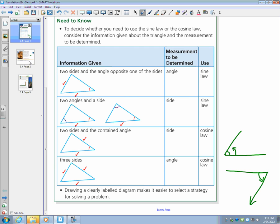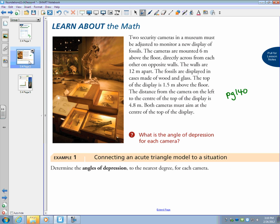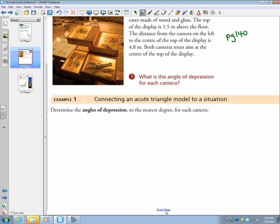Let's look at our first problem here. Two security cameras in a museum must be adjusted to monitor a display of fossils. The cameras are mounted six meters above the floor, directly across the room from each other on opposite walls. The walls are 12 meters apart. The fossils are displayed in cases made of wood and glass. The top of the display is 1.5 meters. The distance from the camera on the left to the center of the top of the display is 4.8. Both cameras must aim at the center top of the display. What we have to do is determine the angles of depression for each camera.